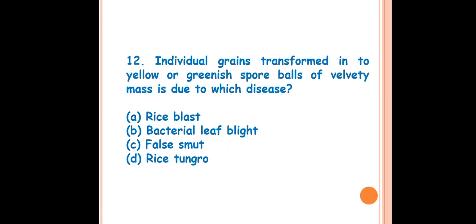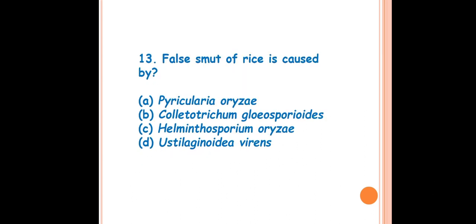Question 12: Individual grains transform into yellowish or greenish round balls of velvety mass — this is due to which disease? The answer is C — false smut of rice. This is the characteristic symptom of false smut, where the grains transform into greenish or yellowish round balls of velvety mass. Question 13: False smut of rice is caused by? The answer is D — Ustilaginoidea virens. We have already discussed that this pathogen produces chlamydospores.